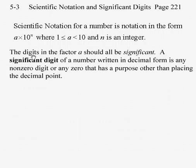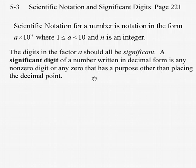The digits of the factor A should all be significant. A significant digit of a number written in decimal form is any non-zero digit or any zero that has a purpose other than placing the decimal point.